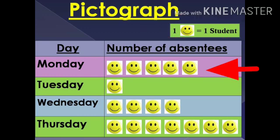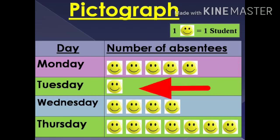Then, for Monday, we draw 5 smileys because 5 students were absent on Monday. For Tuesday, we draw 1 smiley because 1 student was absent on Tuesday.